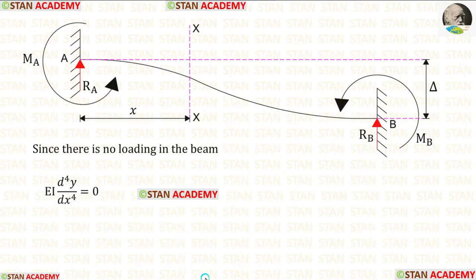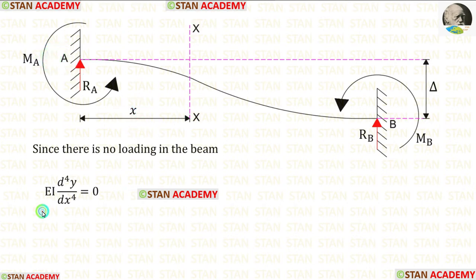In this beam, let us make a section XX at a distance of x from point A. EI d⁴y/dx⁴ is the loading in the beam. In this beam, there is no loading.